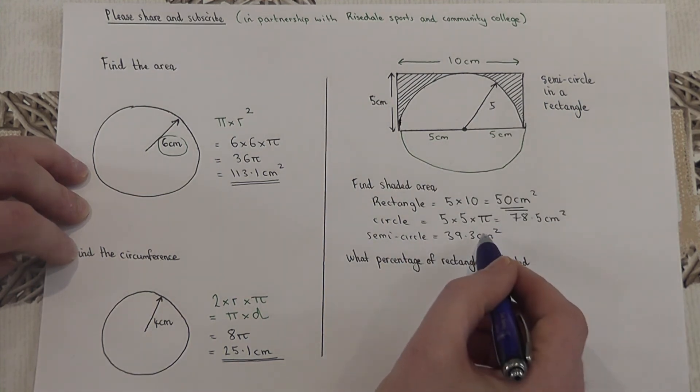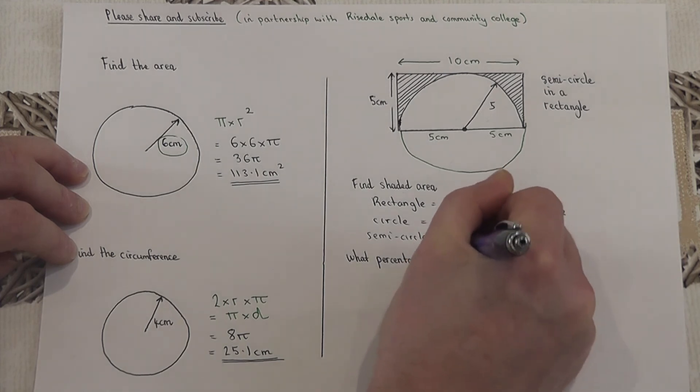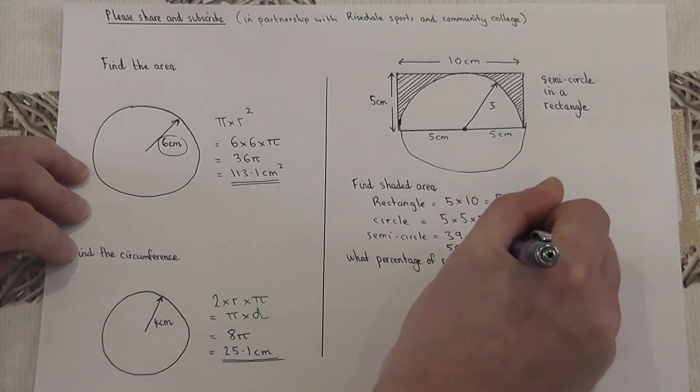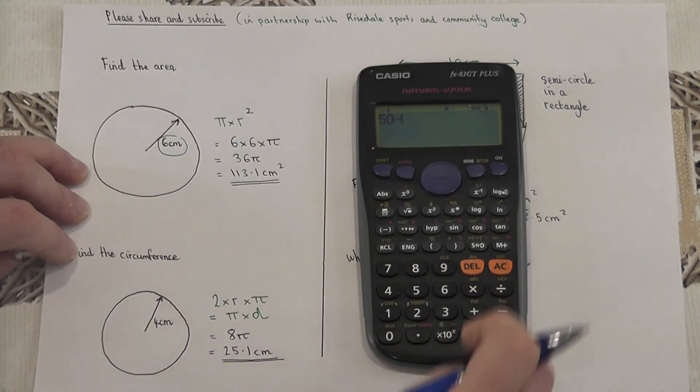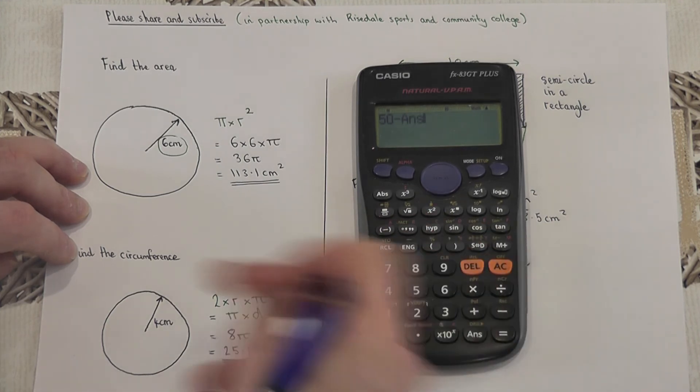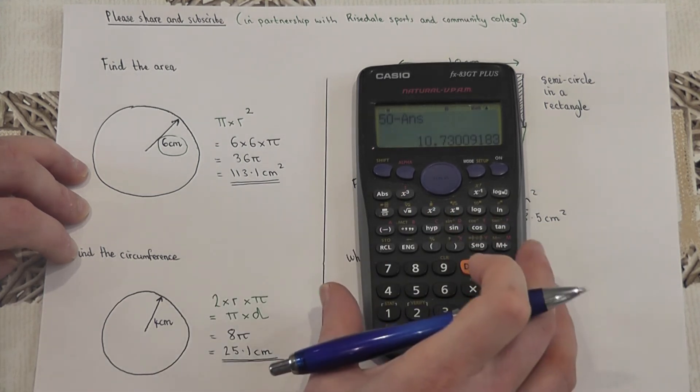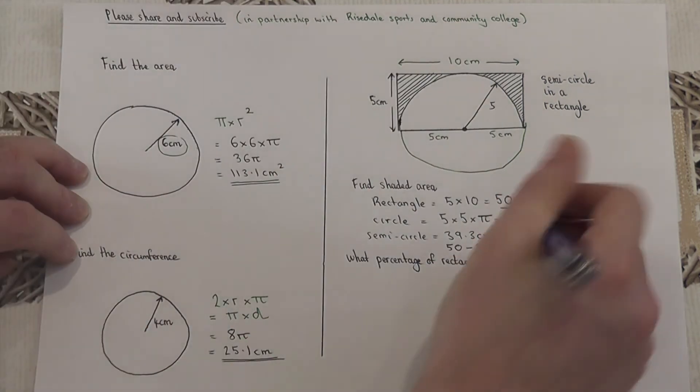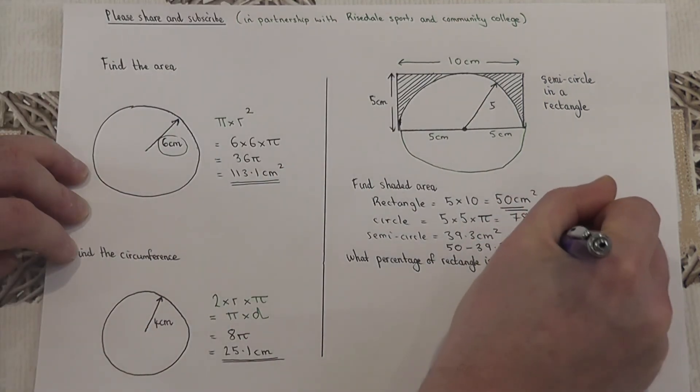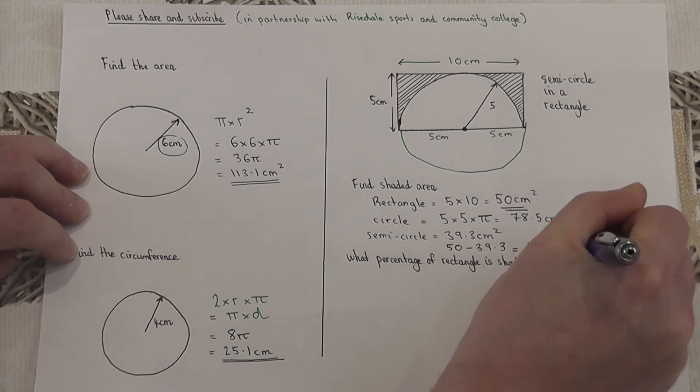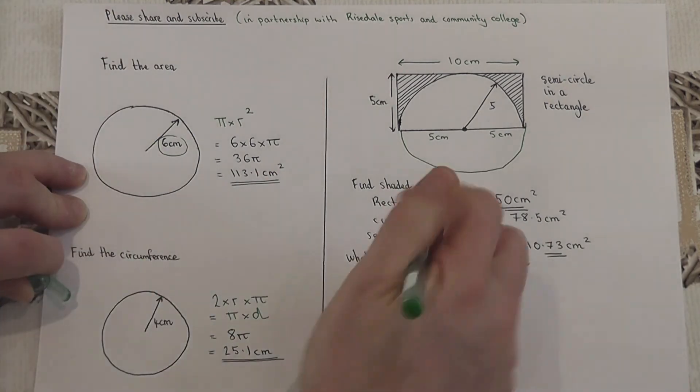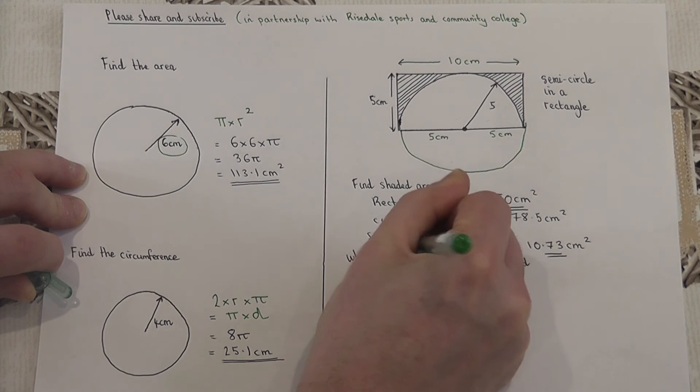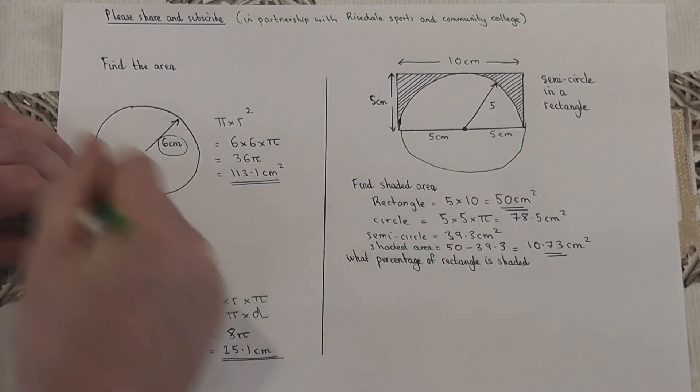So therefore 50 take away 39.3 equals—so I'll do 50 take away, I'll put ans in, that will use the most accurate decimal from before. And that gives me 10.73 centimeters squared to 2 decimal places. And that is the area of the shaded region. And that is the answer to this particular question.